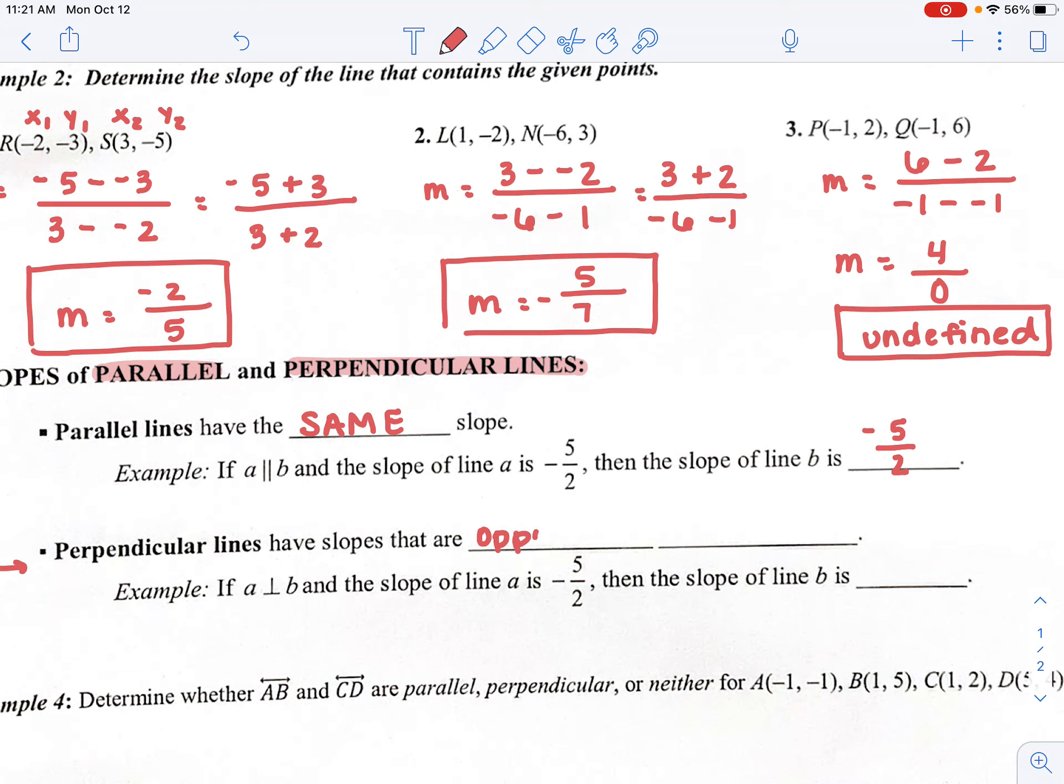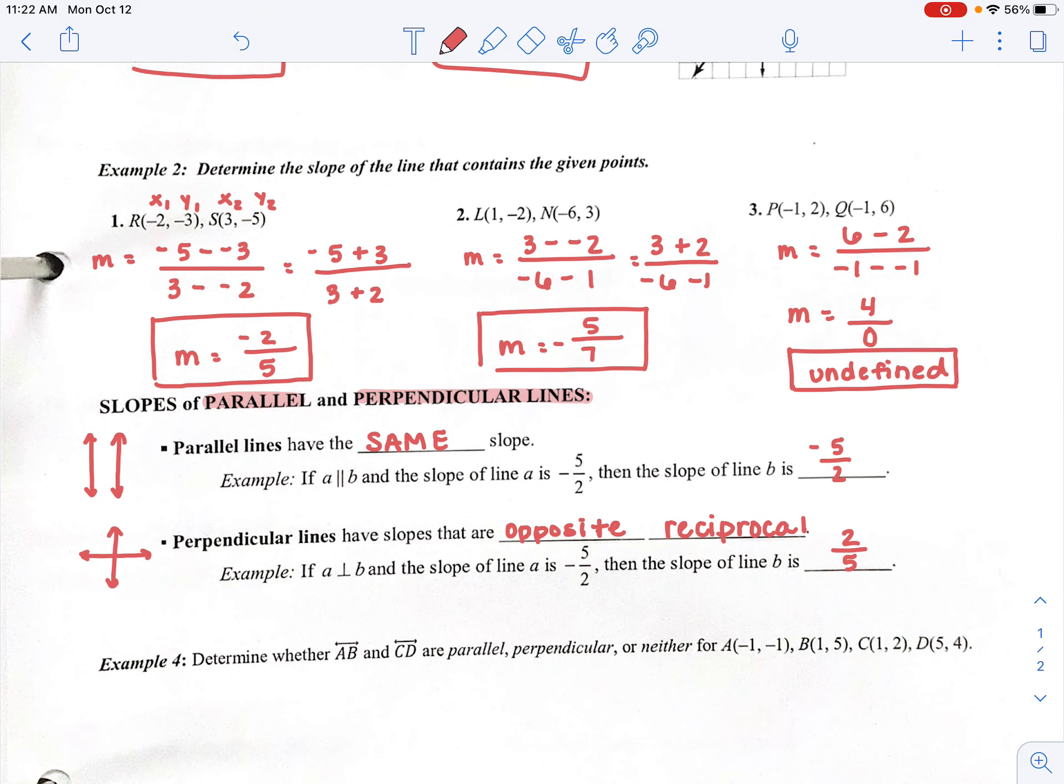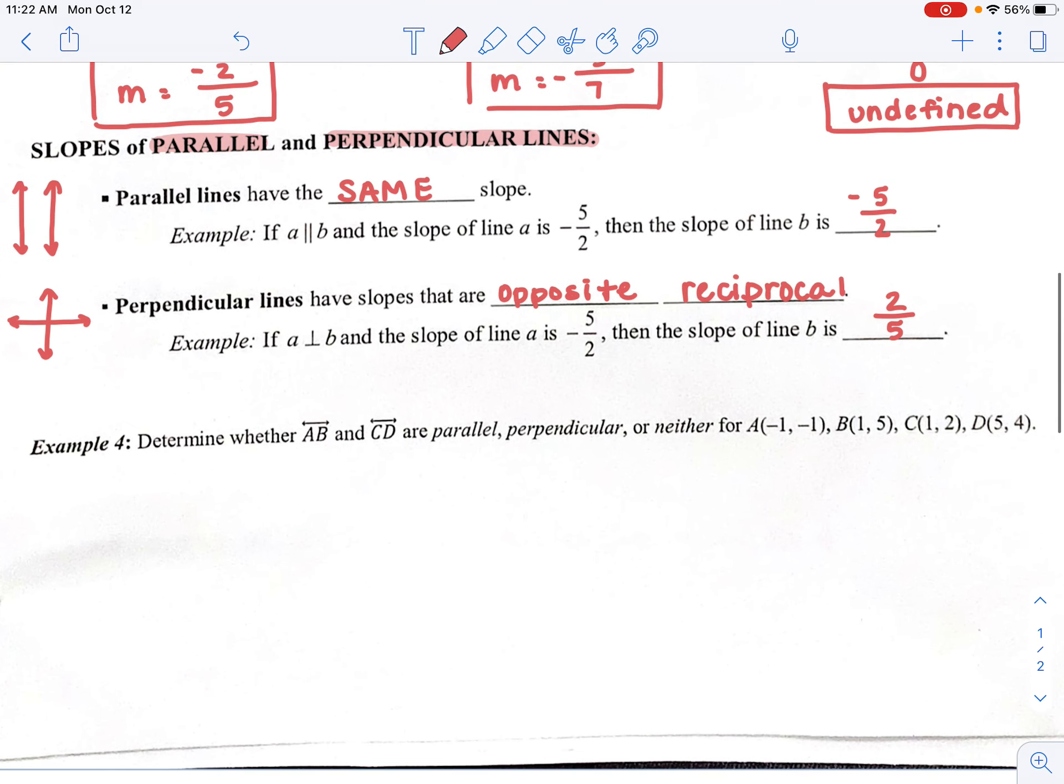Perpendicular lines, they intersect and they actually form a right angle when they intersect each other. Their slopes are not the same. They actually have the opposite reciprocal, which means you flip the fraction or that slope and you change the sign. So if line A is negative 5 over 2, the slope of line B, if they are perpendicular, should be 2 over 5. And if it was negative, it's going to be now positive.